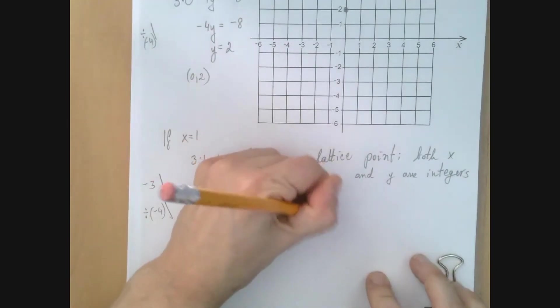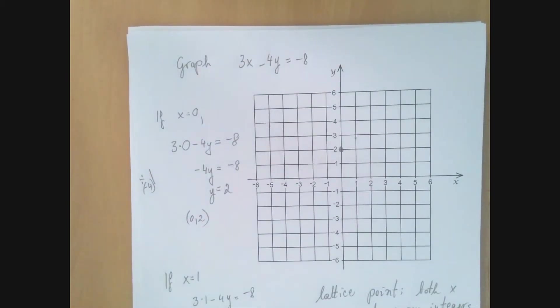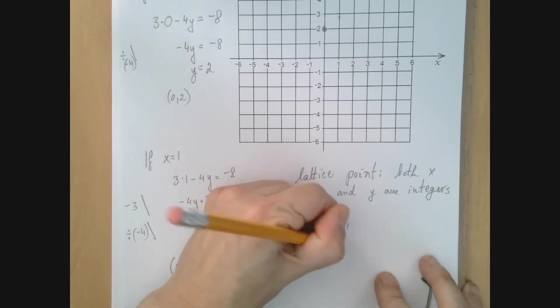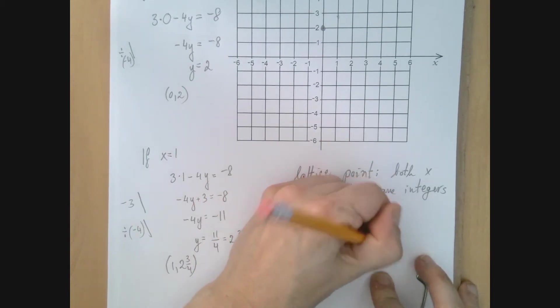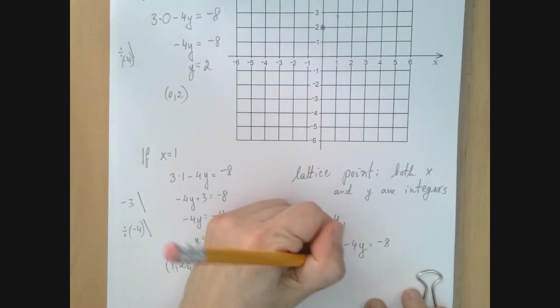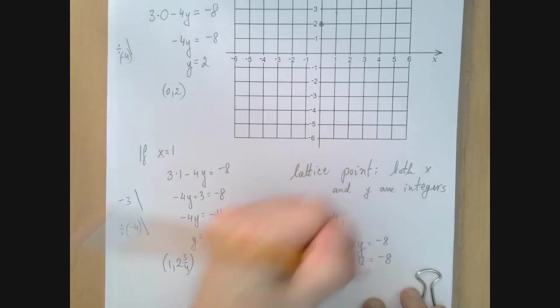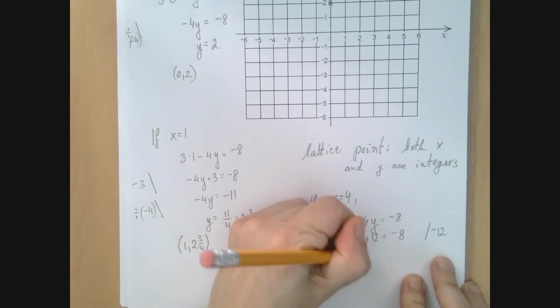So if x equals 4, then the equation 3x minus 4y equals negative 8 will become 3 times 4 minus 4y equals negative 8, which is the same as minus 4y plus 12 equals negative 8. We subtract 12 from both sides,